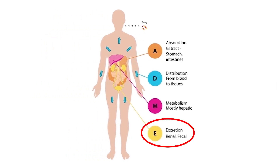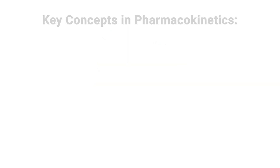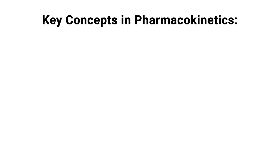Excretion. The final stage is the removal of the drug and its metabolites from the body. This is primarily accomplished through the kidneys as urine, but can also occur via feces, breath, sweat, and other routes. Key concepts in pharmacokinetics: